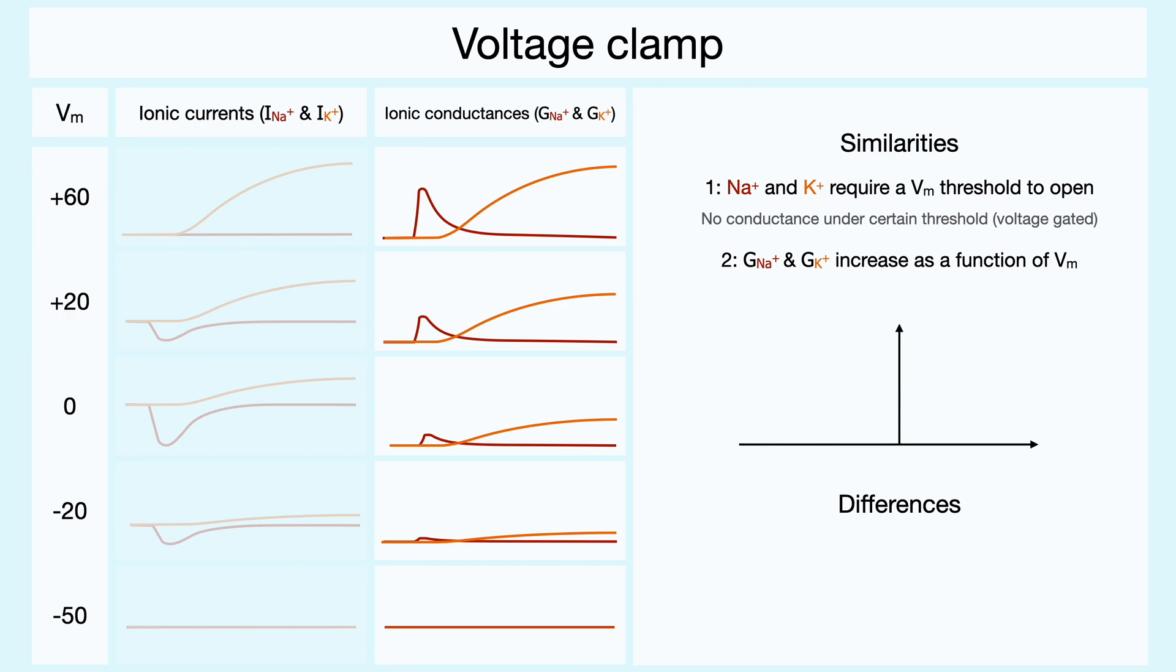When we consider the peak conductance as a function of membrane potential, the relation for both ions is sigmoidal in nature. At a very negative membrane potential, the channels are closed, and no ions cross, whereas at very positive potentials, the conductance plateaus at its highest. We will later see how to obtain this relation.